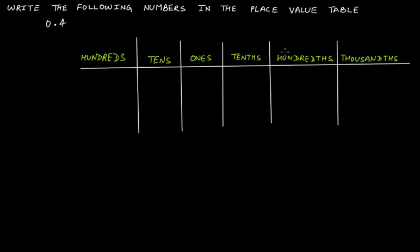We have already pre-drawn a table to save time, with extra place values like hundreds, tens, ones, and thousandths. In this example you only use two place values: 0 is at the ones place and 4 is at the tenth's place. So 0 comes here and 4 comes here.